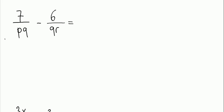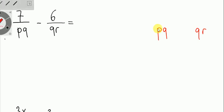First of all, I'm going to write the first denominator, which is PQ, and the second denominator, as you can see, is Q and R. Then I'll try to figure out which letter I need, or which letter I should write next to these two fractions.